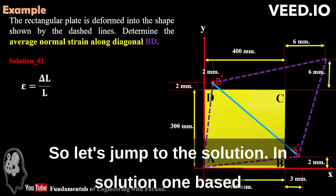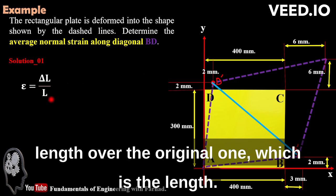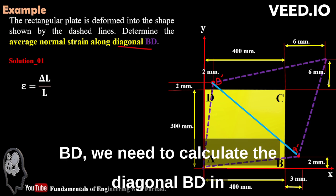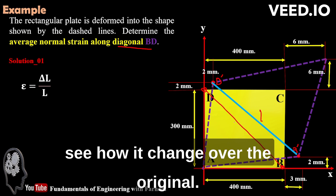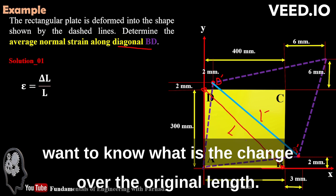In solution 1, based on Mechanics of Materials, strain is delta L, change in length, over the original length. So if you want to do that for diagonal BD, we need to calculate the diagonal BD in the original form, then the deformed form, and then see how it changes over the original. If this is L, this is L prime, we want to know what is the change over the original length.